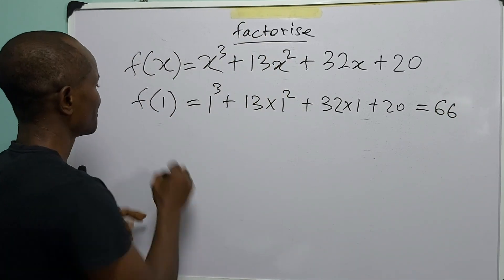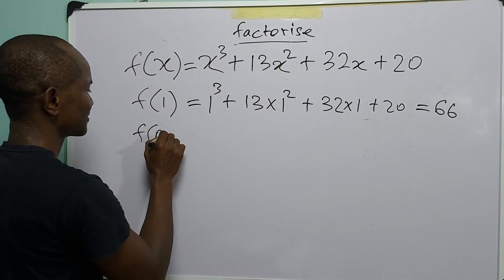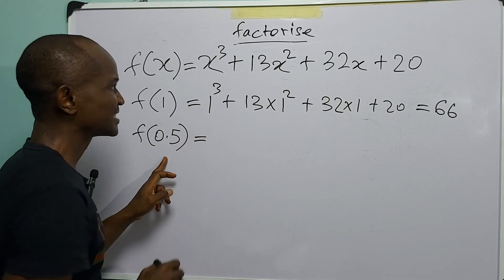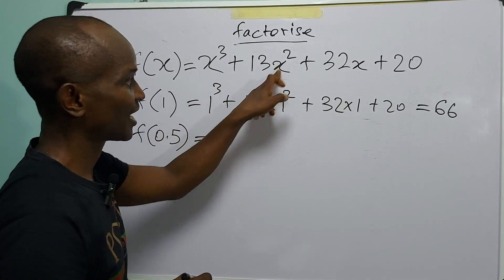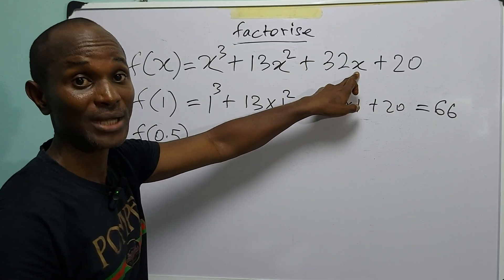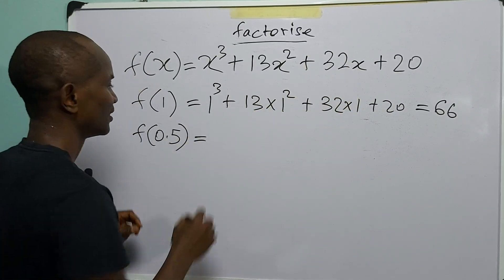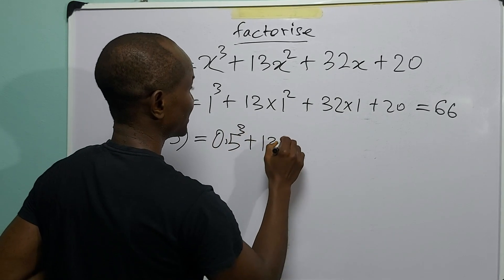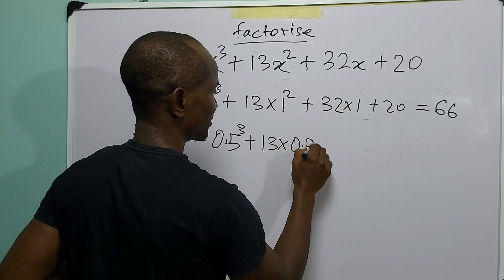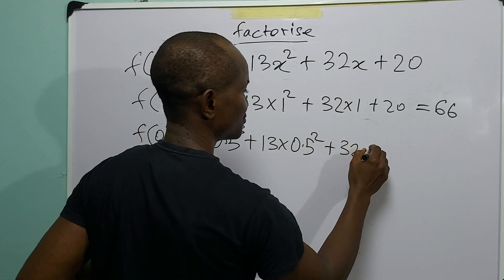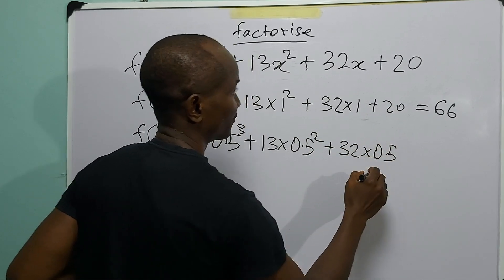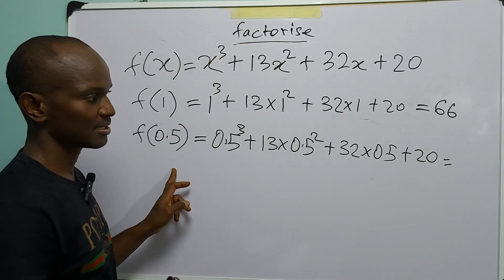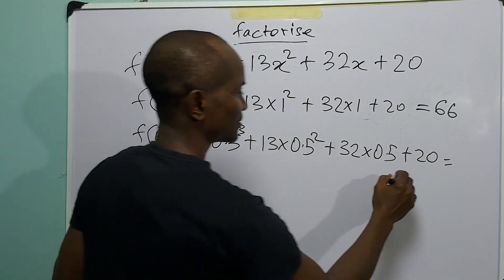Using a calculator to evaluate this, we get 66. We can also let x be equal to 0.5. Once more, we simply plug in 0.5 into all the places where we have x: 0.5 cubed plus 13 multiplied by 0.5 squared plus 32 multiplied by 0.5 plus 20, which evaluates to 39.375.